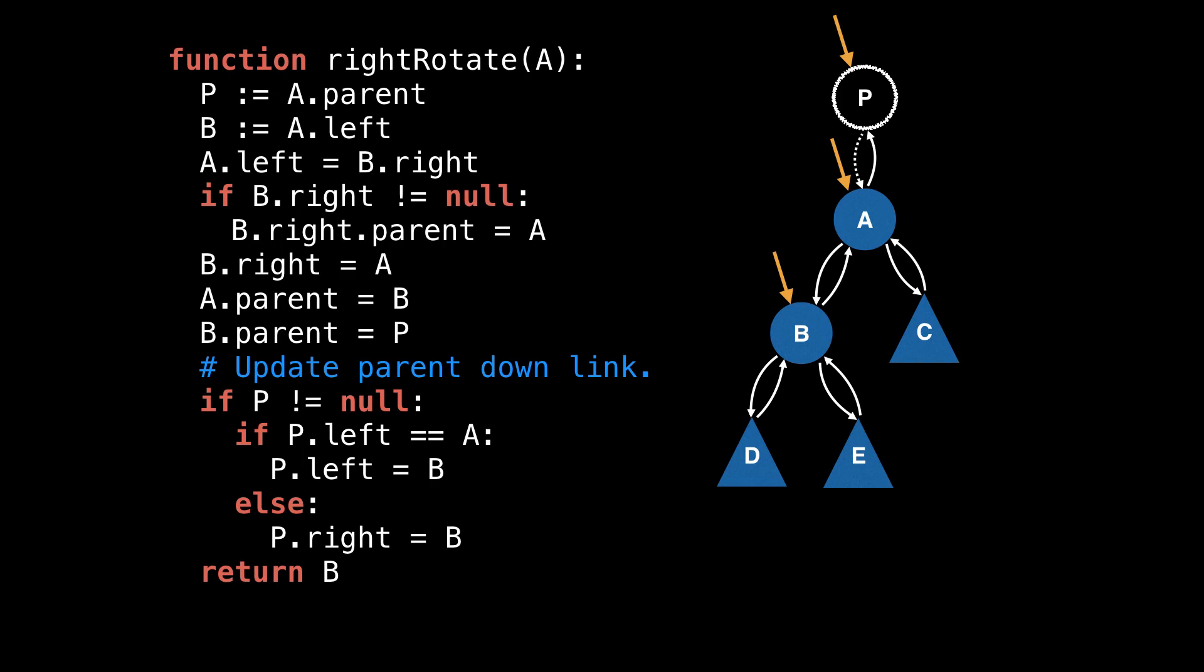Of course, throughout this example, assume B is not null. If you're paranoid, you can add an extra if statement to check for this condition. However, it would be a mistake to assume B's right subtree is not null. We actually have to check against this before setting B's right child's parent to reference A.